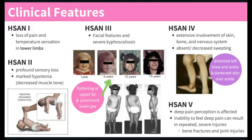For the clinical features, type 1 specifically shows loss of pain and temperature sensation in the lower limbs. For type 2, it's profound sensory loss with marked hypotonia, which is decreased muscle tone. You can see this in the bottom picture — it results in a lack of stiffness, as the baby can't really hold himself up.